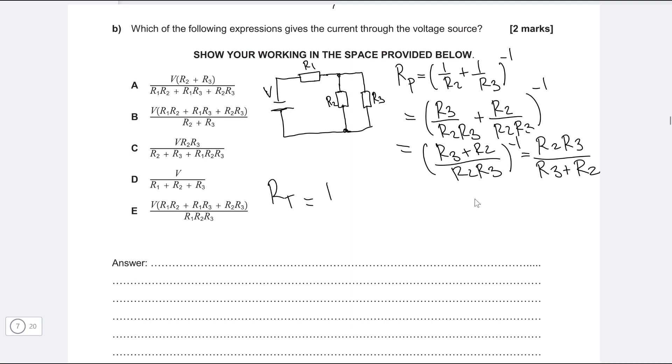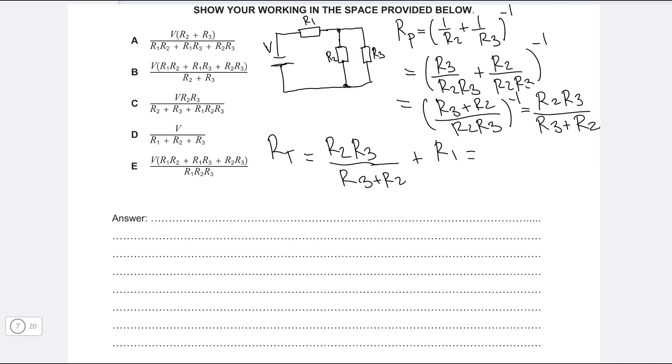This will then be equal to R2 R3 over R3 plus R2. This is just the parallel branch, which is in series with R1.